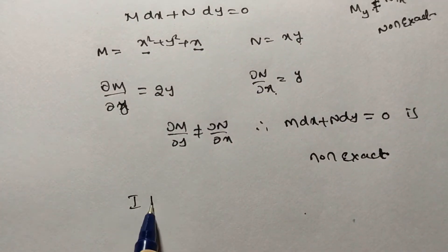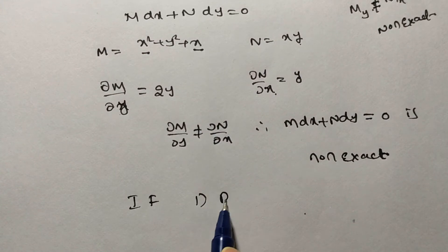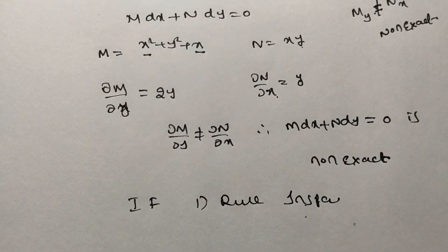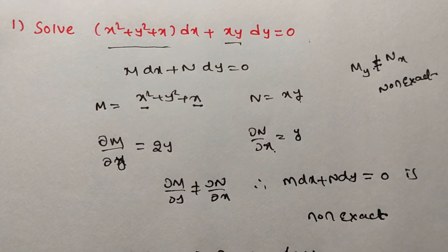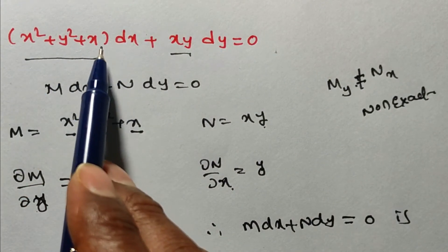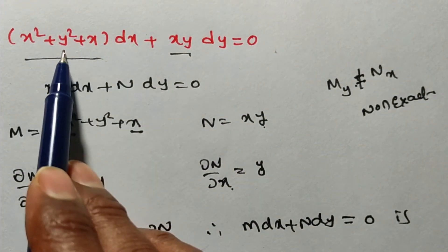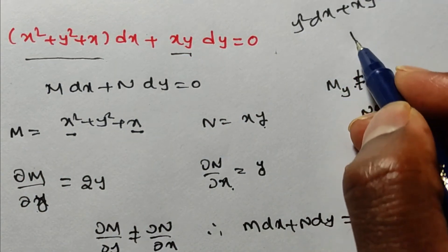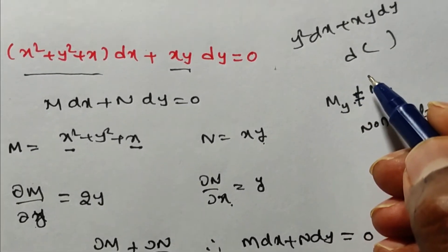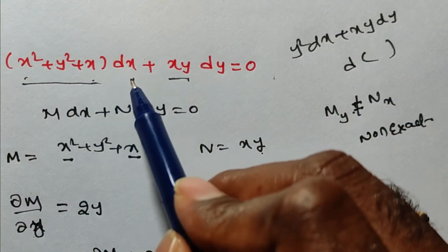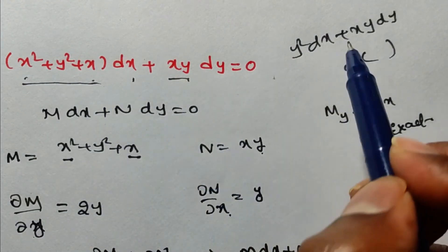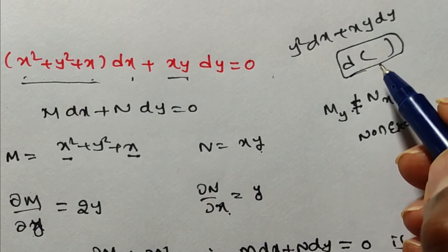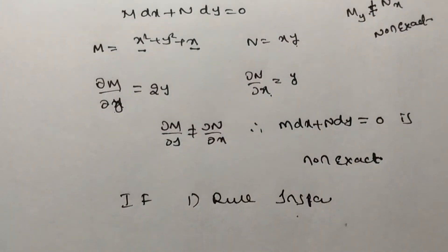We have different methods to find an integrating factor. Rule 1 is the inspection method. Here you observe: x² dx and x dx we can handle, but we have y² dx + xy dy together, and you cannot write that as a derivative of a single function. So inspection method is not possible in this case.